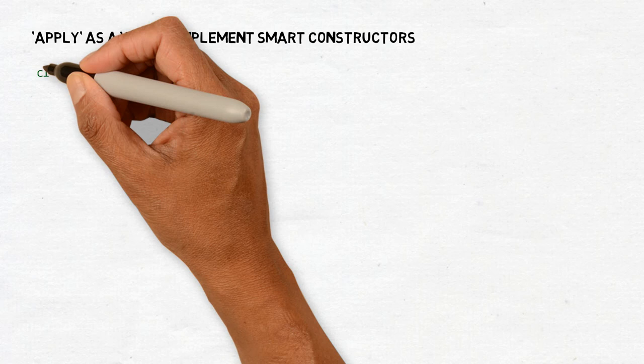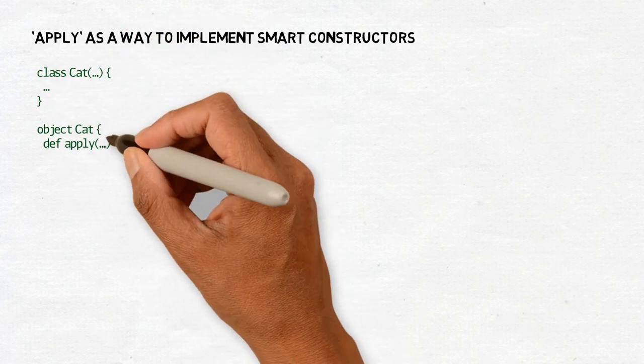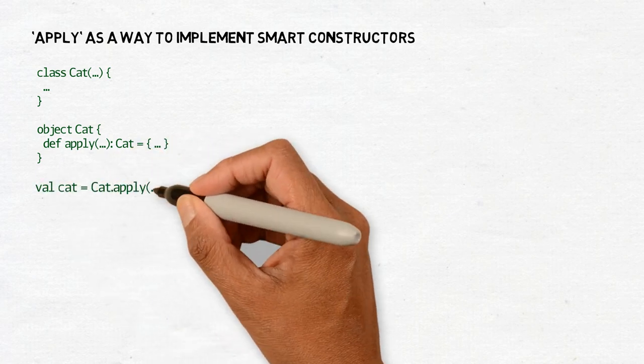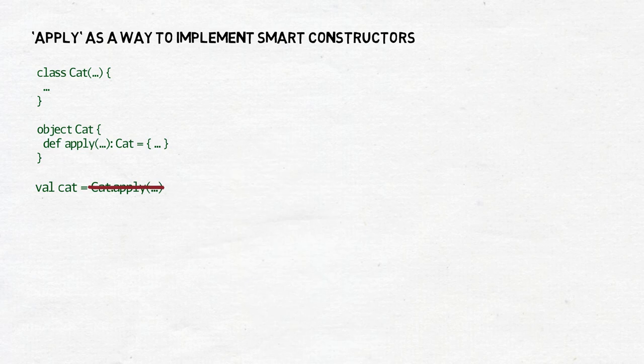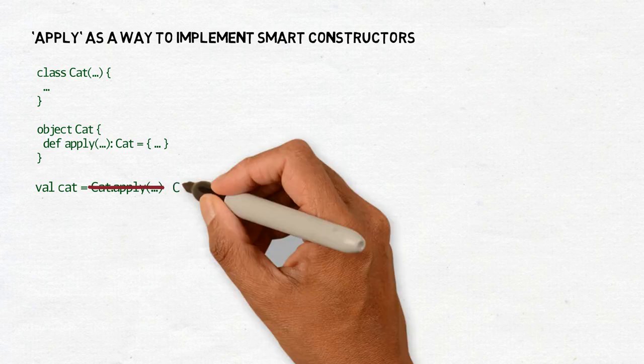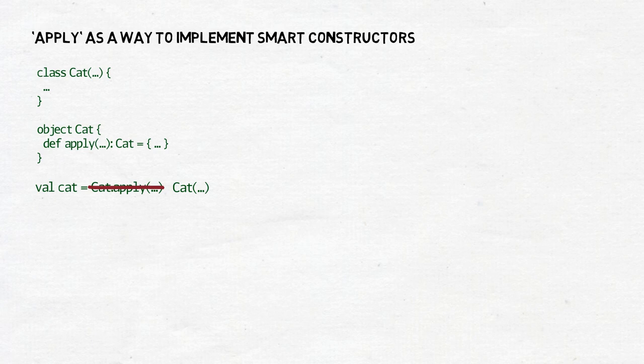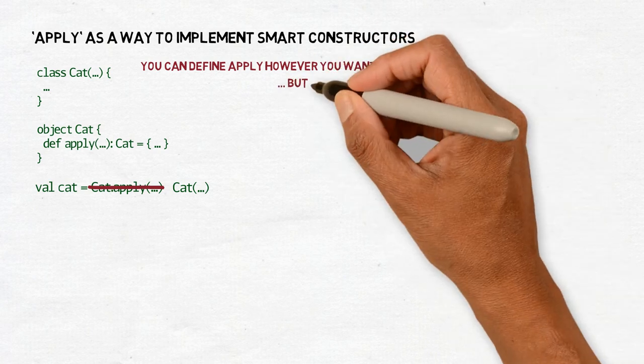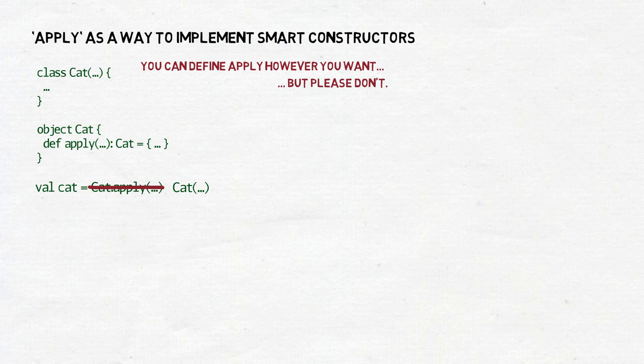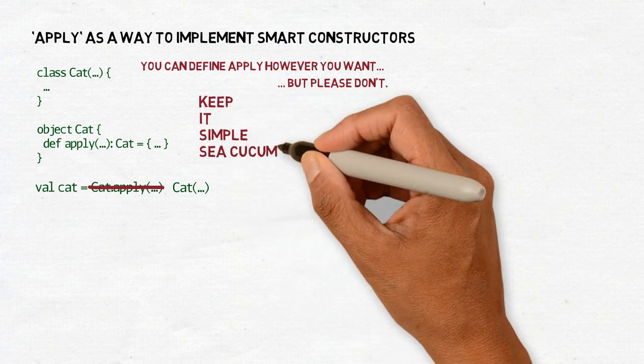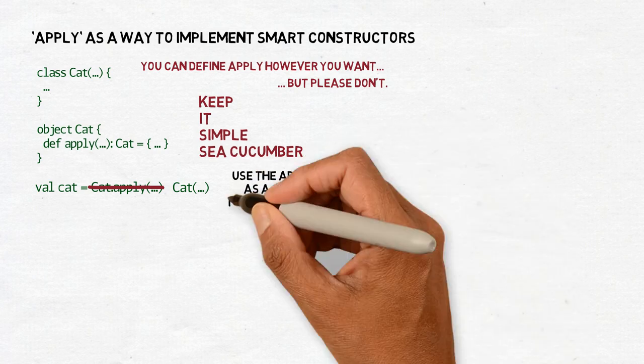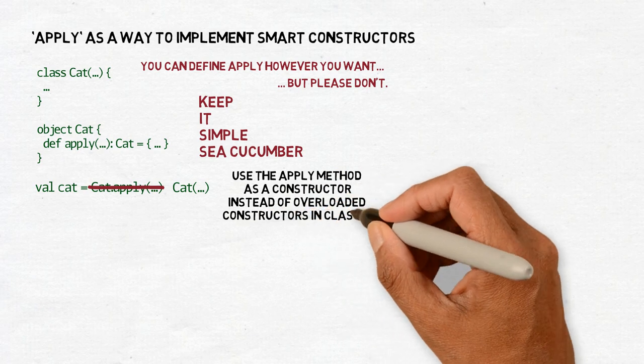The only real superpower of the apply is that it can be called without the use of its actual name. Instead of writing x.apply and the list of arguments, you can write x and the list of arguments immediately and the compiler will know you wanted to call apply but you were too lazy to write it down. Other than that, you can define apply however you want, but please don't. I believe there is value in keeping things simple and so I will tell you this. Use the apply method as a constructor and only as a constructor. Don't use overloaded constructors in the classes, use apply.